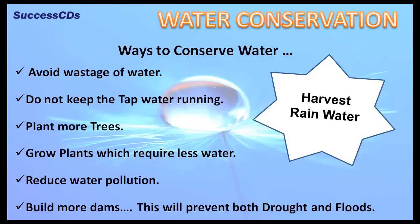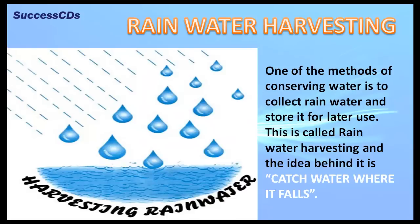Do not keep the tap water running. Plant more trees. Grow plants which require less water. Reduce water pollution. Build more dams — this will prevent both drought and floods. Harvest rainwater.